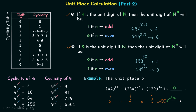I hope you now understand the use of cyclicity of 4 and the cyclicity of 9 while calculating for the unit digit. In the next lecture we will focus on the use of the cyclicities of digits 2, 3, 7, and 8. This is all for this lecture — I will see you in the next one.